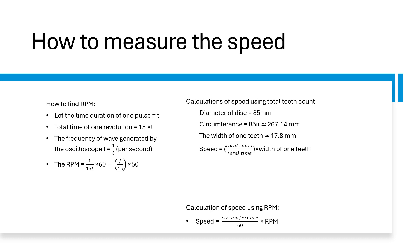And the second method is the RPM method. So we already know what is the RPM on the different voltages. And we know the circumference which is 267.14 millimeters. So we can directly find the speed using this formula, which is the circumference divided by 60 into RPM.